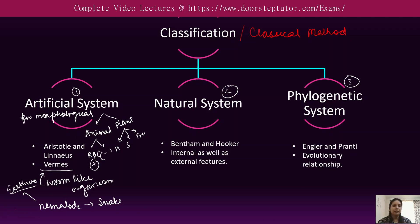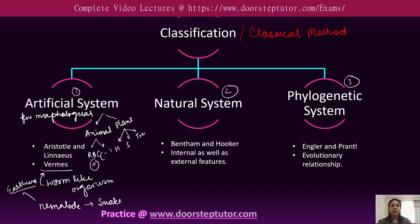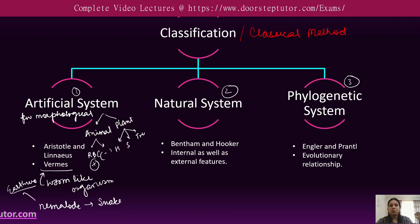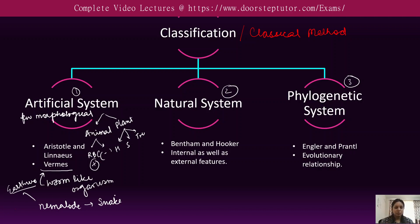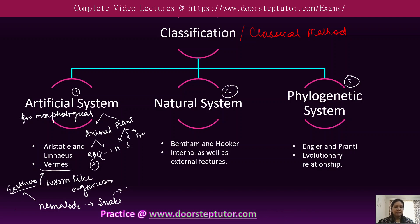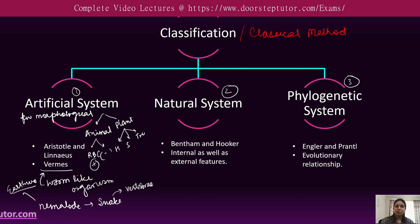But later we came to know that these two organisms are very dissimilar and should not be grouped into one category. They look similar but belong to different groups — the earthworm is a nematode without a backbone, while the snake has a backbone, yet it was grouped under worms. These are the drawbacks of the artificial system, which grouped organisms on morphological features alone.